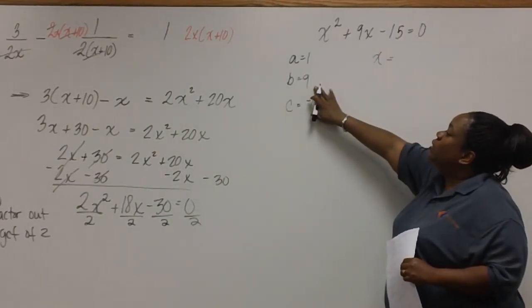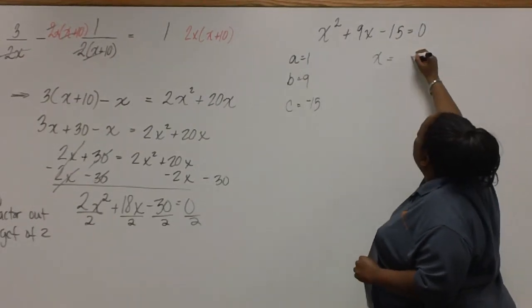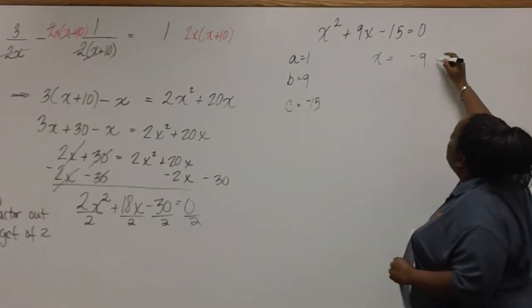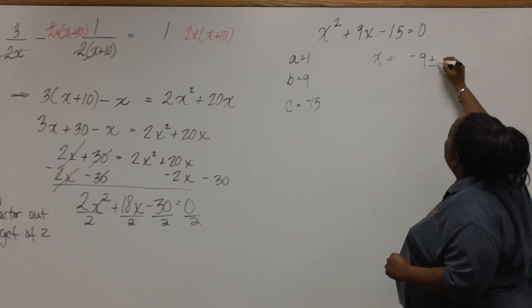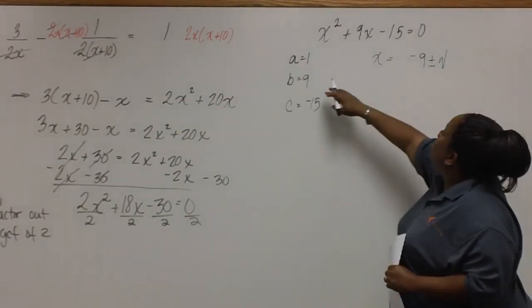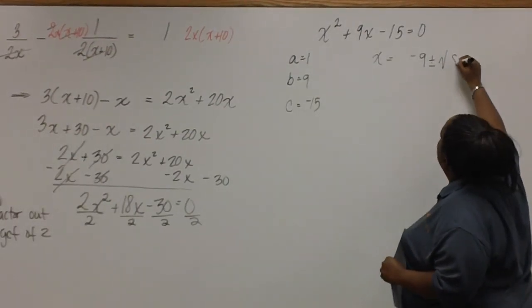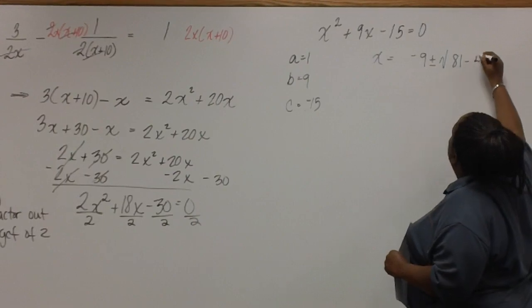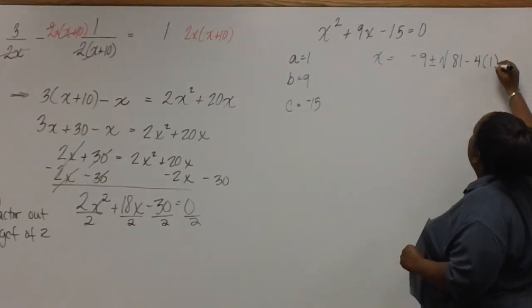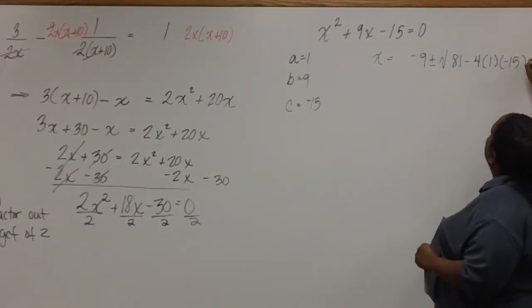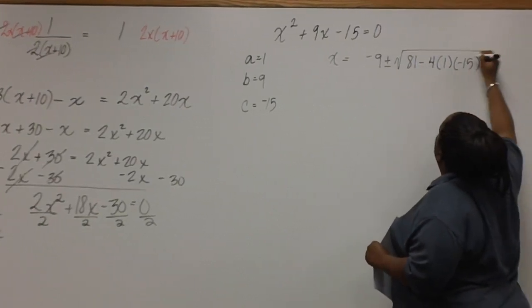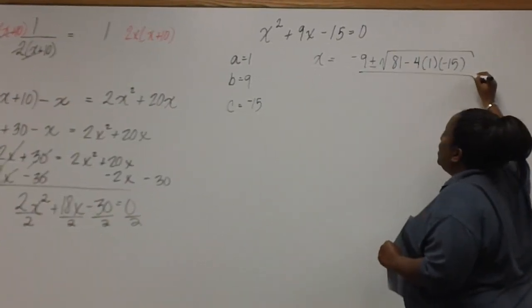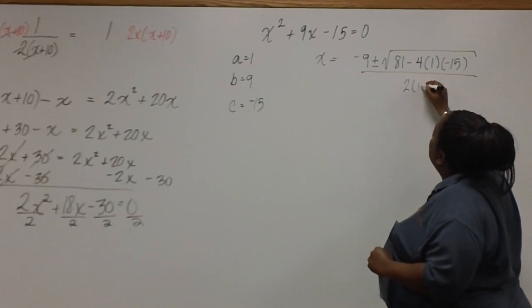Remember that we need to change the sign on 9. So we now have negative 9 plus or minus, and then after squaring our b, we have 81 minus 4 times a times c. And this is all divided by 2 times a.